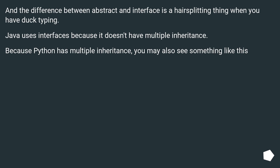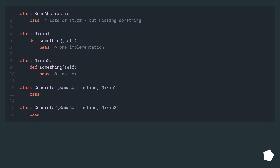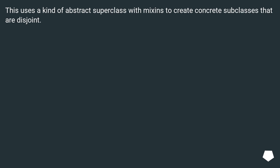The difference between Abstract and Interface is a hair-splitting thing when you have duck typing. Java uses interfaces because it doesn't have multiple inheritance. Because Python has multiple inheritance, you may also see something like this — using a kind of Abstract Superclass with mixins to create concrete subclasses that are disjoint.